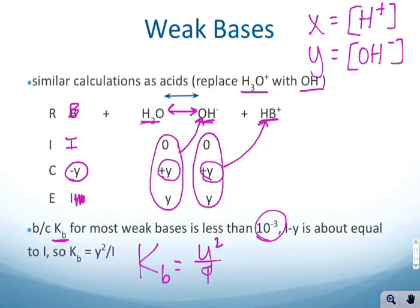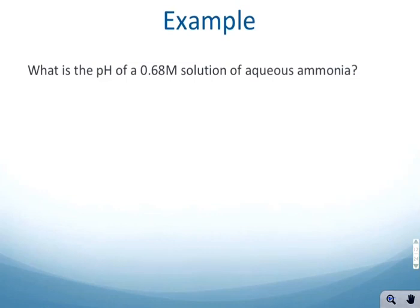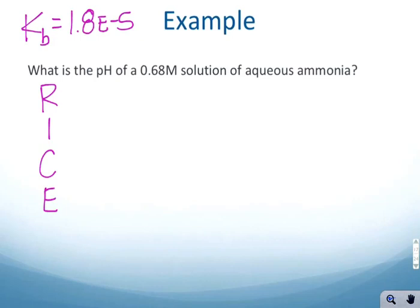Moving right into an example: What is the pH of a 0.68 molar solution of aqueous ammonia? If you don't have the Kb of ammonia memorized, you're probably going to end up having it memorized just from using it so much. The Kb of ammonia is 1.8×10^-5, the same as the Ka of acetic acid. First thing is to set up our RICE table. Once you get good at these, you won't need to set up the RICE table every time, but if you have no idea where to start, just set up a RICE table. For aqueous ammonia, NH₃, we're going to react that with some water.